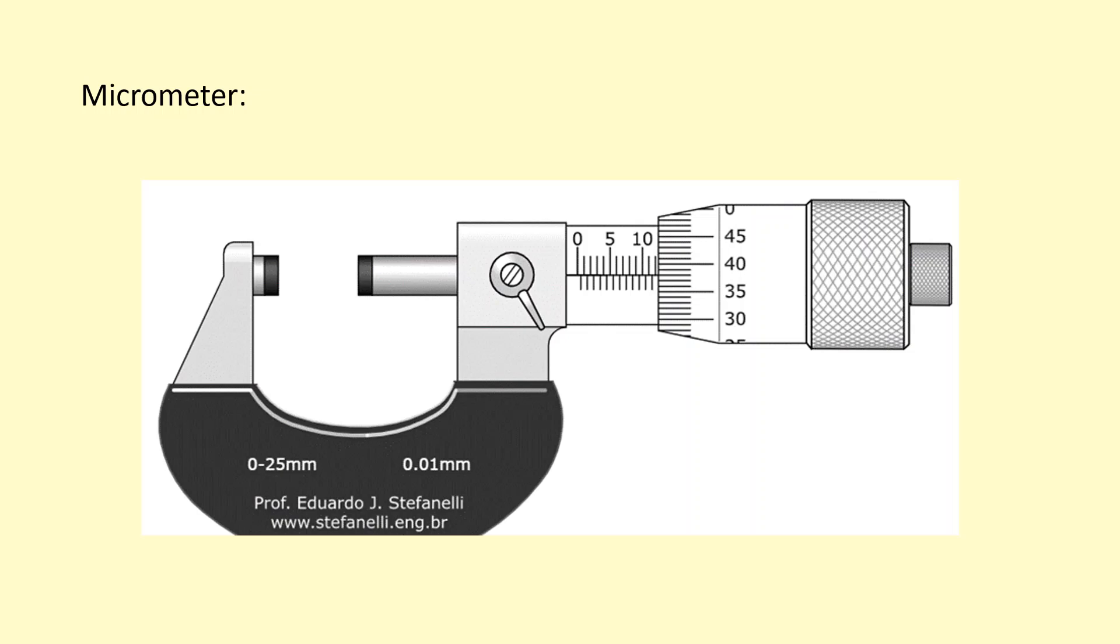Micrometers are high precision instruments used to measure the size of small objects, for example the diameter of a wire or the width of a coin. You place the object between the anvil and the spindle like this, then turn.